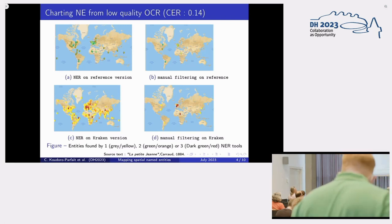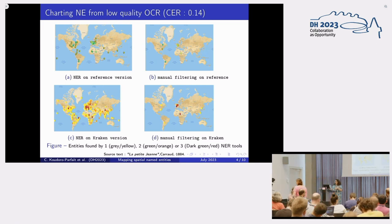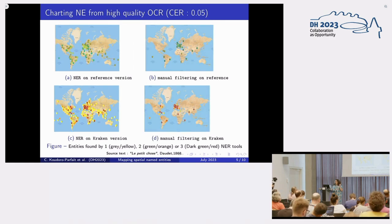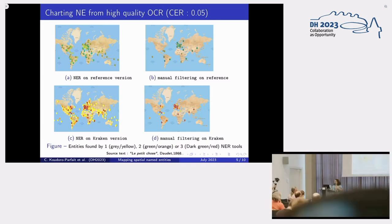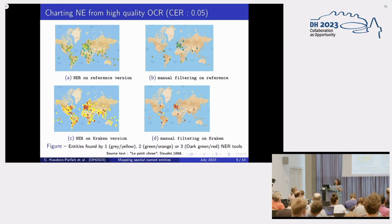This example uses a low-quality OCR with a character error rate of 0.14. We also tested with a high-quality OCR, and we observed the same behavior: many yellow and grey points disappear, and we keep the red and dark green points.